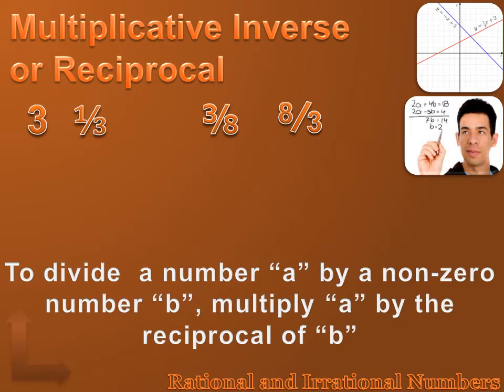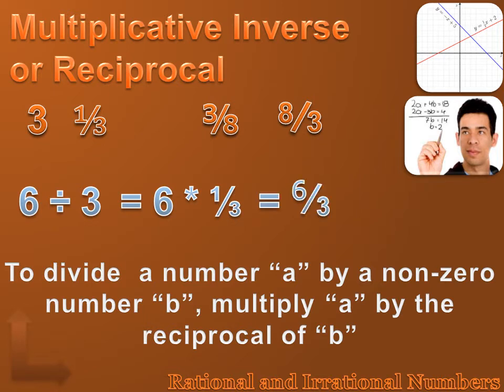Now, how is this helpful? Well, it's real helpful. Because, to divide a number A by a non-zero number B, multiply A by the reciprocal of B. In other words, you can divide by flipping the second number and multiplying. Here's an example. What's 6 divided by 3? Well, you know that. That's easy. 6 divided by 3 is 2. But watch this. 6 divided by 3 equals 6 times the reciprocal of 3, or 1 third. And 6 times 1 third equals 6 over 3. And 6 over 3 equals 2. Now, trust me. That property is going to prove to be very, very useful as we get further into algebra.